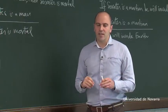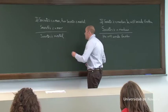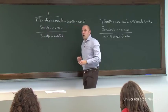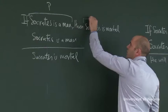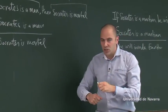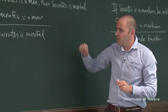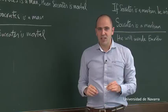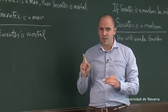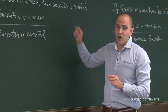This means that in a valid argument, we should distinguish between logical and non-logical vocabulary. For example, 'Socrates is a man' — this will be non-logical vocabulary. And 'Socrates is mortal' — this will be another simple proposition, non-logical vocabulary. And the conditional is part of the logical vocabulary. So to repeat, and this is the definition we will use in this course: an argument is valid means that there is no interpretation of the non-logical vocabulary where the premises are true and the conclusion false.